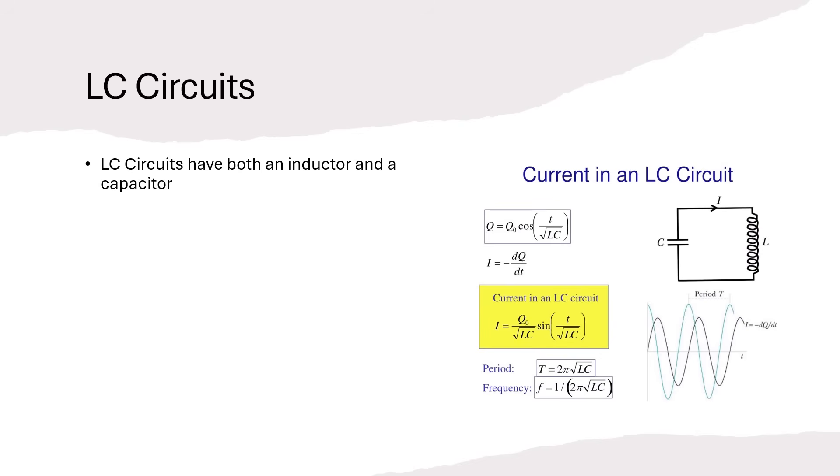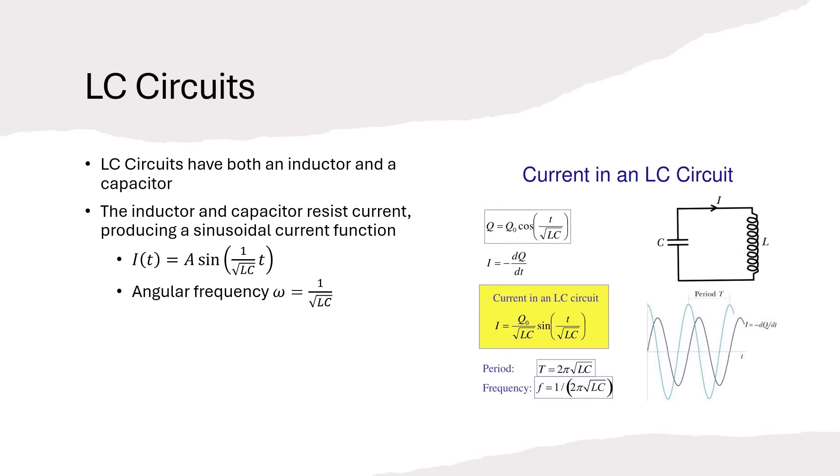Finally, we get to combine capacitors and inductors to get LC circuits. When they're combined in the same circuit, inductors and capacitors create oscillating current with angular frequency 1 over radical LC. This is because as current increases, the inductor fights harder to oppose the current while the capacitor charges, and then as the capacitor charges, current slows down and the inductor fights this change, essentially creating a feedback loop.